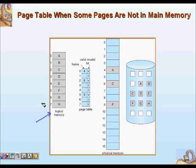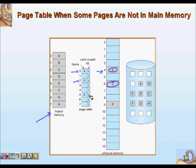Here is an example. The logical memory of the program has eight pages — 0 through 7 — and here is the page table. It shows that page 0 is in frame 4, page 2 is in frame 6, and page 5 is in frame 9. You can see this in the physical main memory: page 0 is in frame 4, page 2 is in frame 6 with content C, and page 5 is in frame 9.